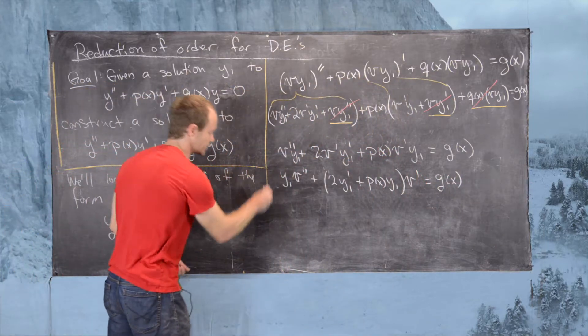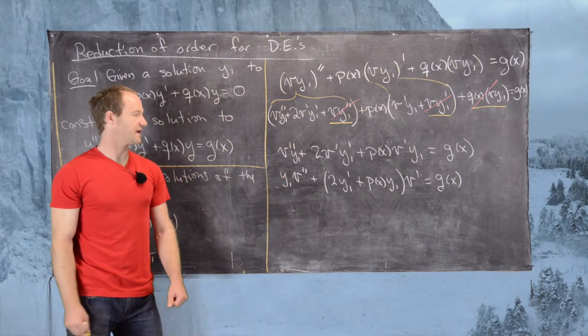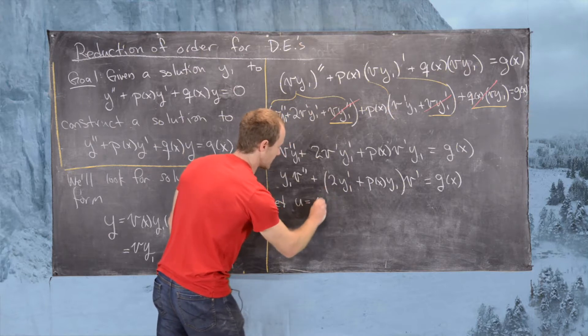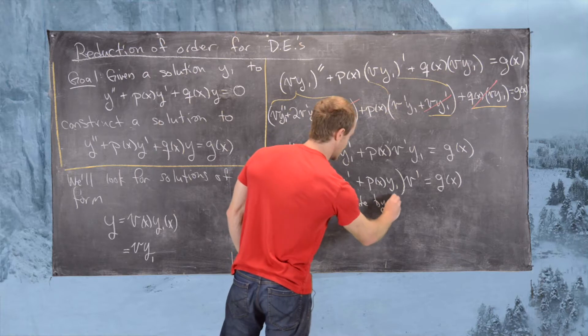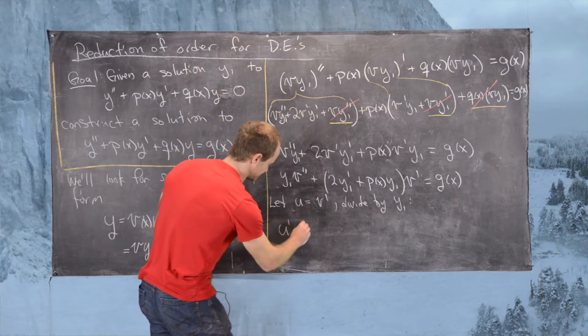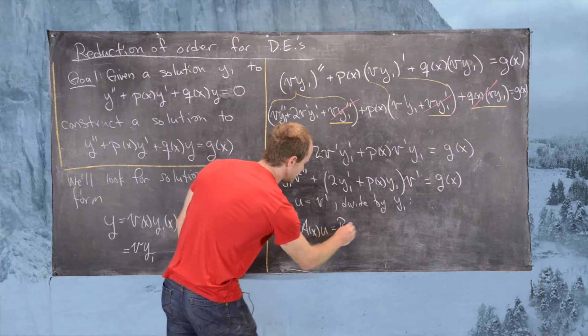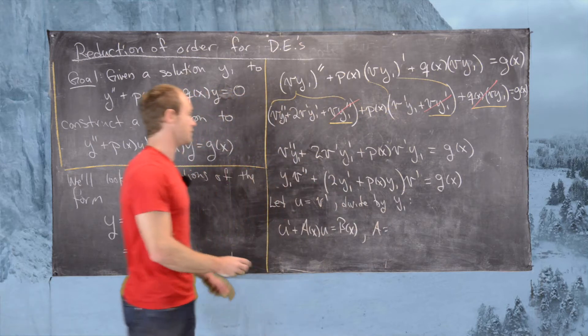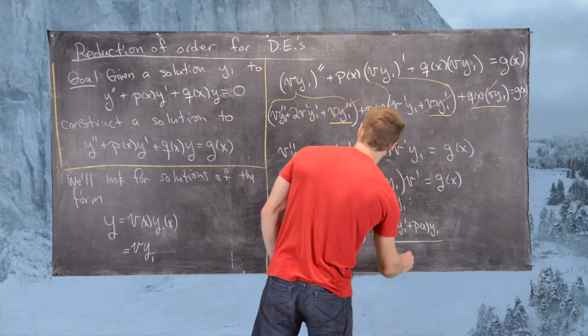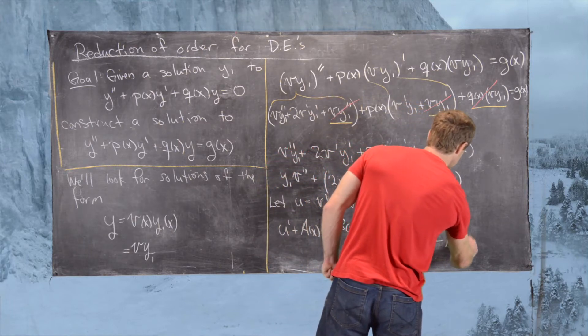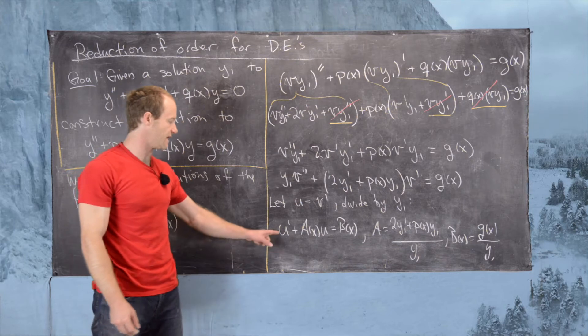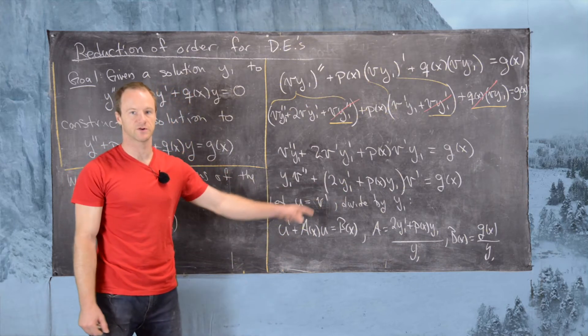Now notice we still have a second order differential equation but v doesn't appear, only v' and v''. This means if we let u = v' and then divide by y1, that gives us the following differential equation: u' + a(x)u = b(x), where a = (2y1' + p(x)y1)/y1 and b(x) = g(x)/y1. Now notice this is a first order linear differential equation for the function u where those functions are related to our original differential equation.